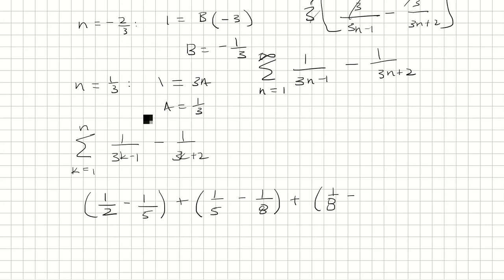Then it's 1 over 8 minus 1 over 11, and so on. And then if we let k equal n, that's going to be 1 over 3n minus 1 minus 1 over 3n plus 2.